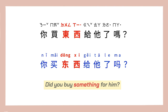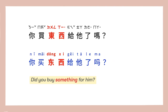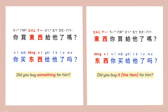你买东西给他了吗? — Did you buy something for him? 东西你买给他了吗? — Did you buy it for him? / Did you buy the item for him? In the first sentence, it's most likely that the speaker doesn't know what the person bought and they're not talking about a specific item. However, for the second sentence, 东西 is placed at the beginning, which indicates that both the speaker and the listener know which specific item it is. So 东西你买给他了吗? means: did you buy it for him?